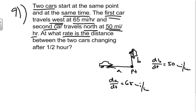We're asked to find at what rate is the distance between the two cars changing after half an hour. The distance between them we're talking about is this length from here to here, and we'll call this distance C.